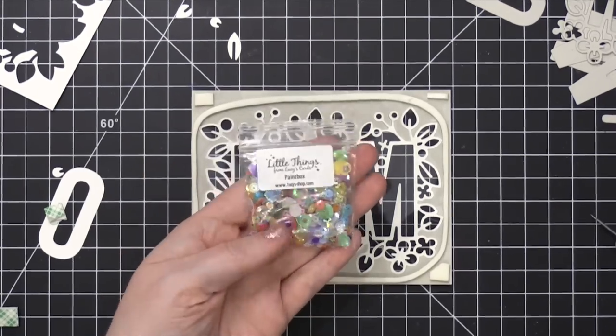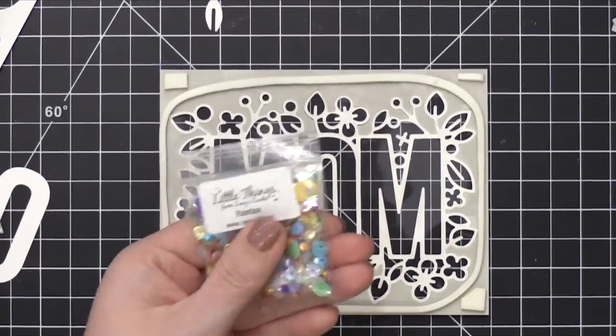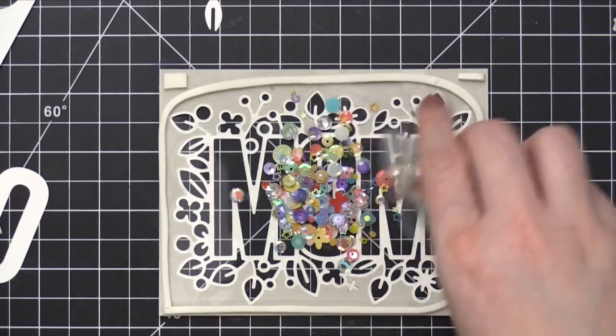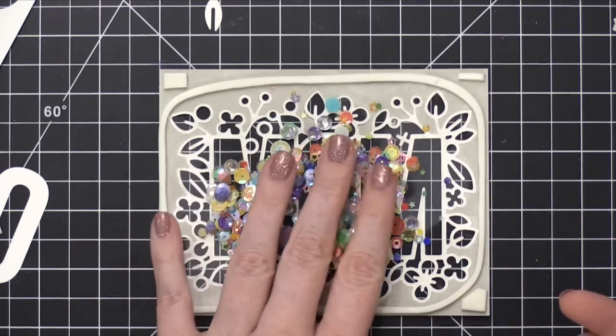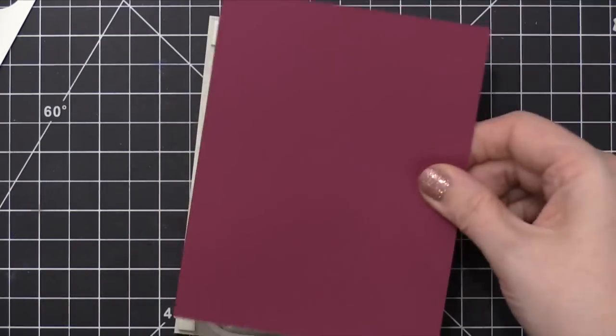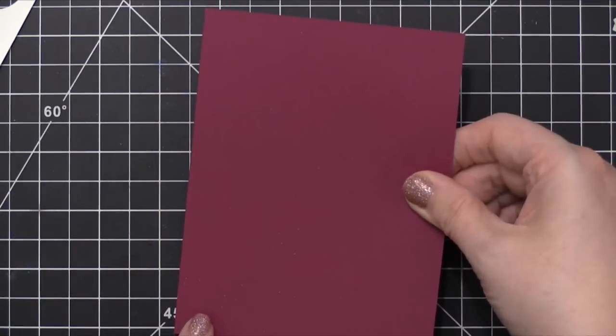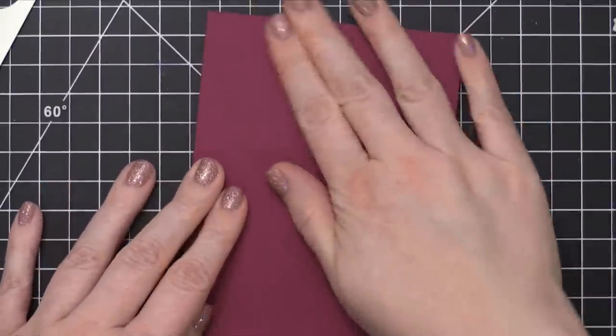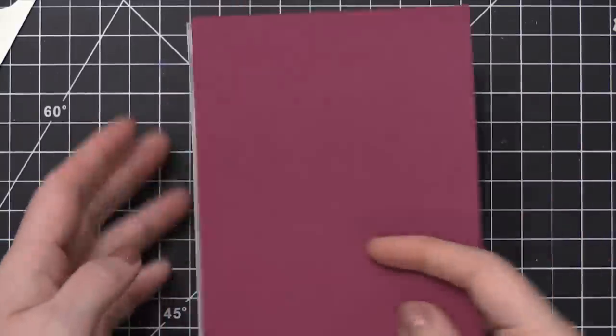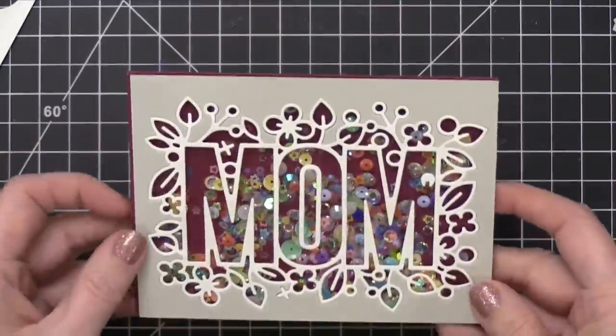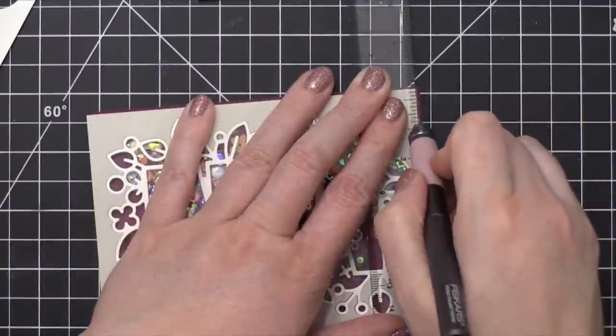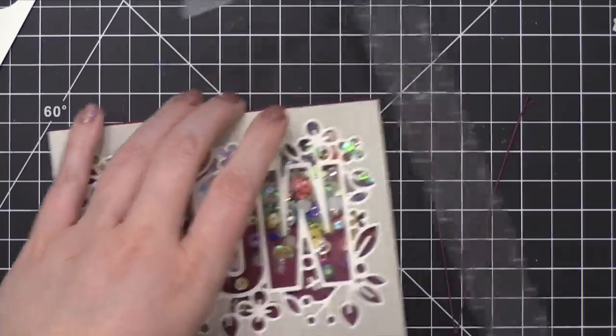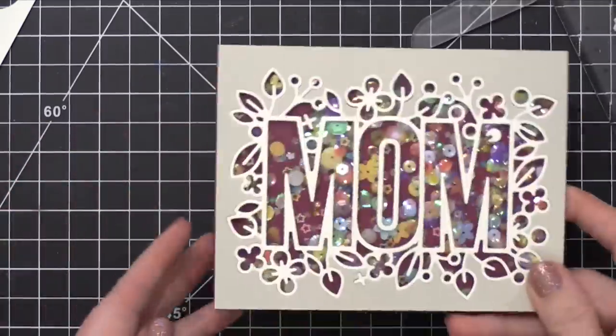So I put some additional foam in those corners, and then I'm going to be using the Paint Box Sequins Mix from Little Things from Lucy's Cards. And I'm putting quite a bit in here because I want it to be nice and colorful. And then I'm going to create, I'm going to take the same color of cardstock I was using before, which is Plum from Hero Arts. I've made a card base out of that, and I lined it up with my shaker area and just pressed it down. So now I have it on a card front. There's a little extra cardstock hanging out on a couple sides. So I did use a ruler and a craft knife just to even those up and make sure that it's perfectly spaced on there.